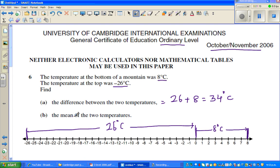The next question is a bit tricky. The mean of the two temperatures. So the mean is halfway between these two. Mean means the average.